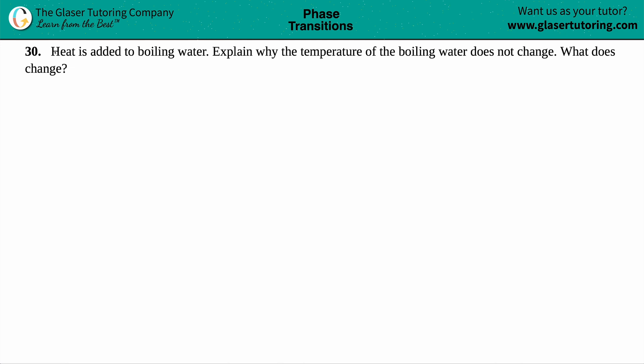Number 30: Heat is added to boiling water. Explain why the temperature of the boiling water does not change, but then what does change. All right, so phase transitions. This is an excellent question because it gives you the idea of what's happening when water boils.